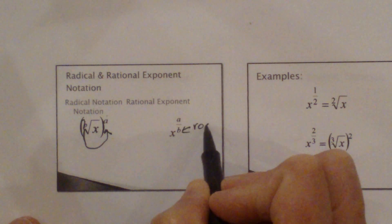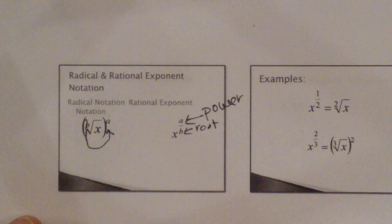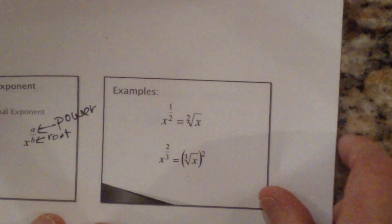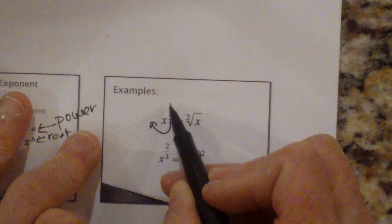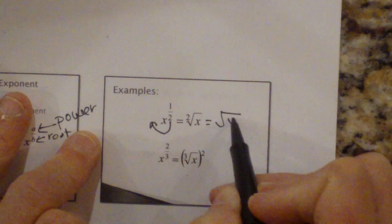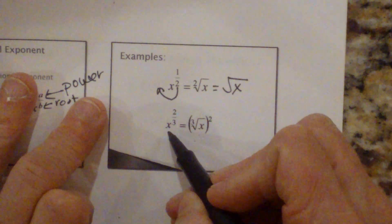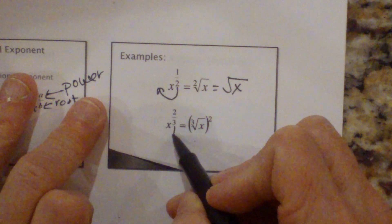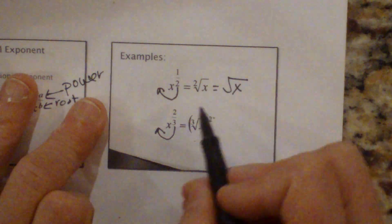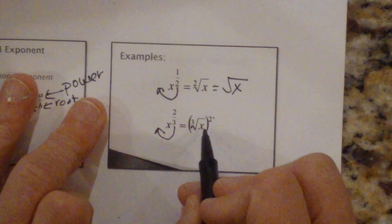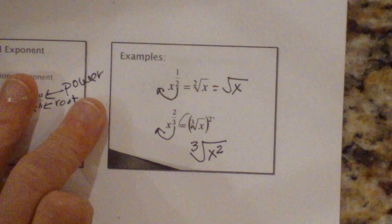Where b is your root and a is the exponent or the power that you're raising that value to. So let's look at a couple quick examples. Let's look at x to the 1 half. If we bring this 2 back over here, that becomes the square root of x — we don't write the 2 there, we assume we know that. And if you have the rational exponent of 2 thirds, x to the 2 thirds, we move the 3 over and it becomes the cube root of x squared. You can write the cube root of x quantity squared, or the cube root of x squared on the inside — either one of those is fine.